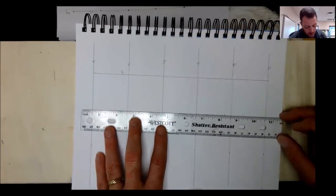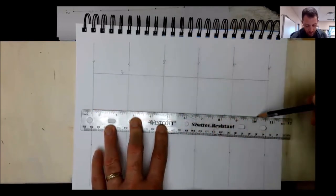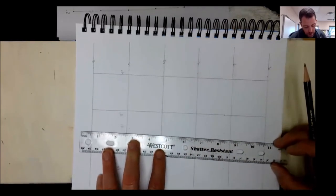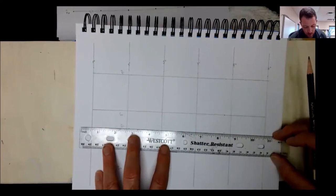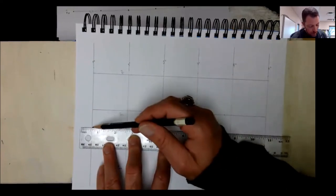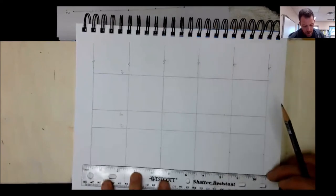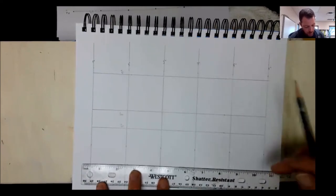Draw that in. Put my lines in here. Draw light. We're using an HB pencil, something like this. A mechanical pencil works great.